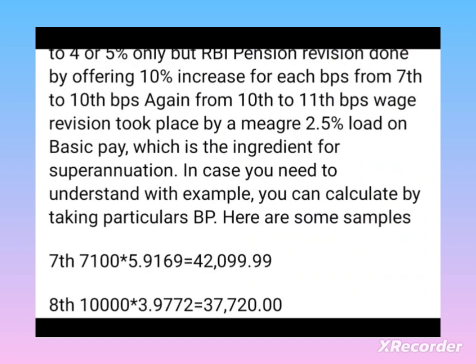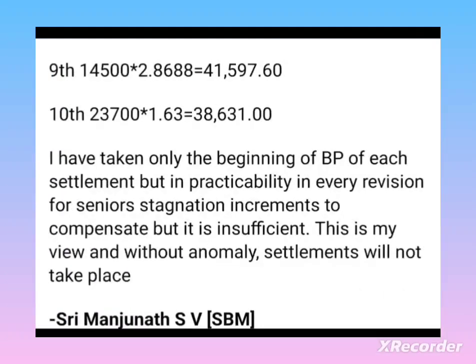In case you need to understand with an example, you can calculate by checking a particular BP. Here are examples from the 7th BPS: 100 into 1, giving 5.9, 169 to 42,000 — approximately 99.99. I have taken only the beginning of the BP settlement, but in practicality, every revision includes senior stagnation increments to compensate, though it is insufficient. In my view, without anomaly settlements, this will not be resolved — as stated by Mr. Shri Manjunath.